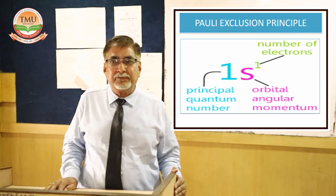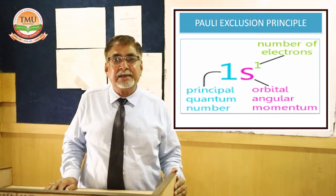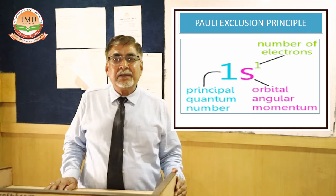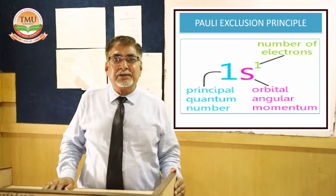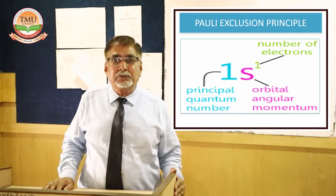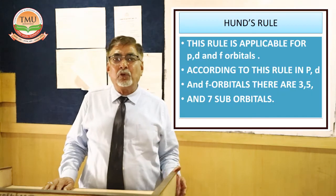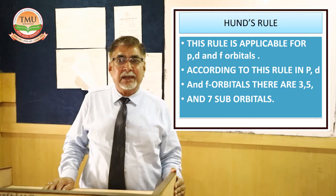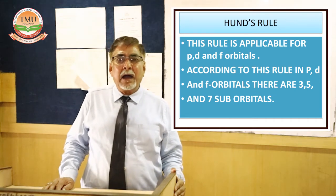Hund's Rule of Maximum Multiplicity also explains the stability of elements. For example, copper (atomic number 29) would normally be written as 4s² 3d⁹, but because half-filled and fully-filled orbitals are more stable, we write it as 3d¹⁰ 4s¹. Similarly, chromium (24) would be 4s² 3d⁴, but according to Hund's Rule we prefer 3d⁵ 4s¹. This rule controls the filling of electrons in P, D, and F orbitals.